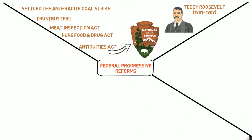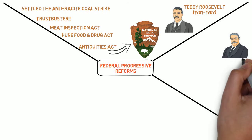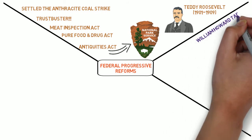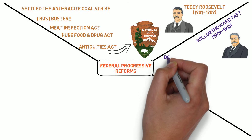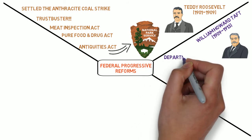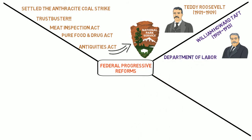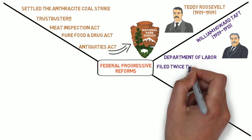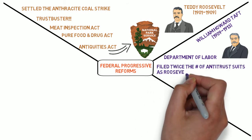After Teddy Roosevelt, presidents William Howard Taft and Woodrow Wilson continued the progressive legacy. President William Howard Taft pushed for the creation of the Department of Labor to address workplace issues. Although it was Roosevelt who was known as the trust buster, Taft actually filed twice as many antitrust suits as TR.